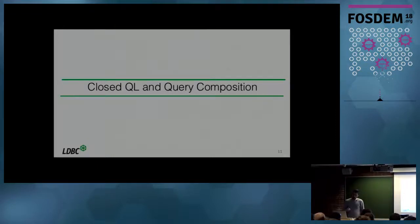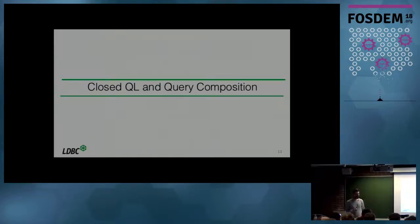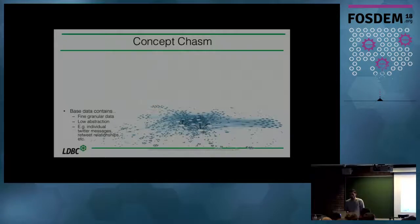The main time I want to spend is talking about the closeness of the language and how you can use that for query composability, and then the second main part is on paths. So why is query composition very important for modern query languages?